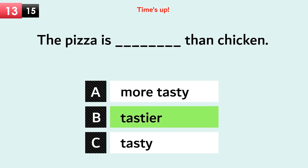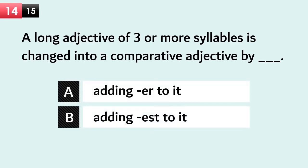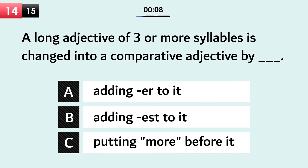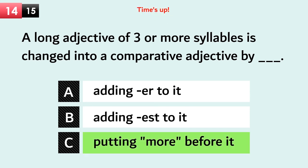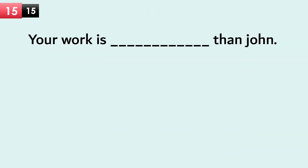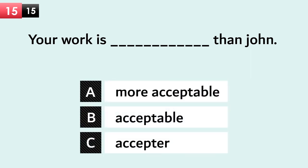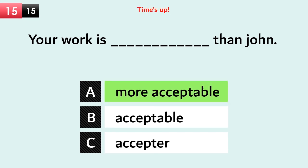The pizza is tastier than chicken. A long adjective of three or more syllables is changed into a comparative adjective by putting more before it. Your work is more acceptable than John's.